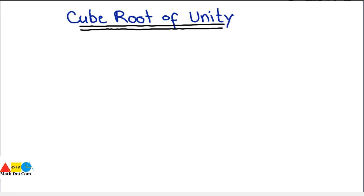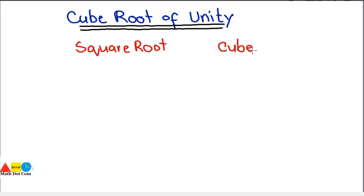Up till now we have seen the concept of square root — what is square root and how to find it. Today we will discuss the cube root of unity. Before discussing it, we must have the concept of cube root, so first we will review square root and then move towards cube root, writing both side by side so you can easily differentiate between the two.